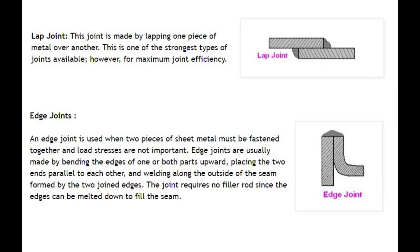Lap Joint: This joint is made by lapping one piece of metal over another. This is one of the strongest types of joints available, however for maximum joint efficiency. Edge Joint: An edge joint is used when two pieces of sheet metal must be fastened together and load stresses are not important.